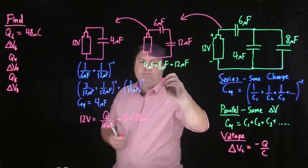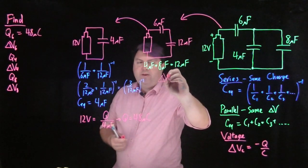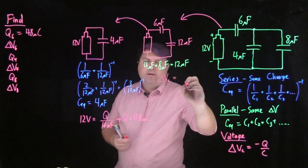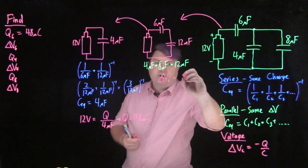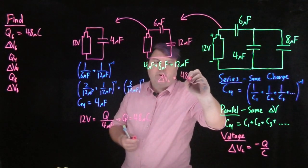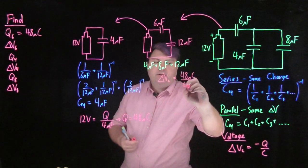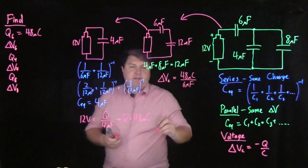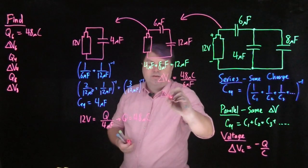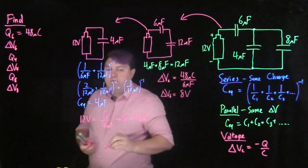I can use this voltage again, so the delta V over the 6 microfarad is going to be its charge, 48 microcoulombs, over its capacitance, 6 microfarads. 48 divided by 6 gets me that delta V6 is 8 volts.